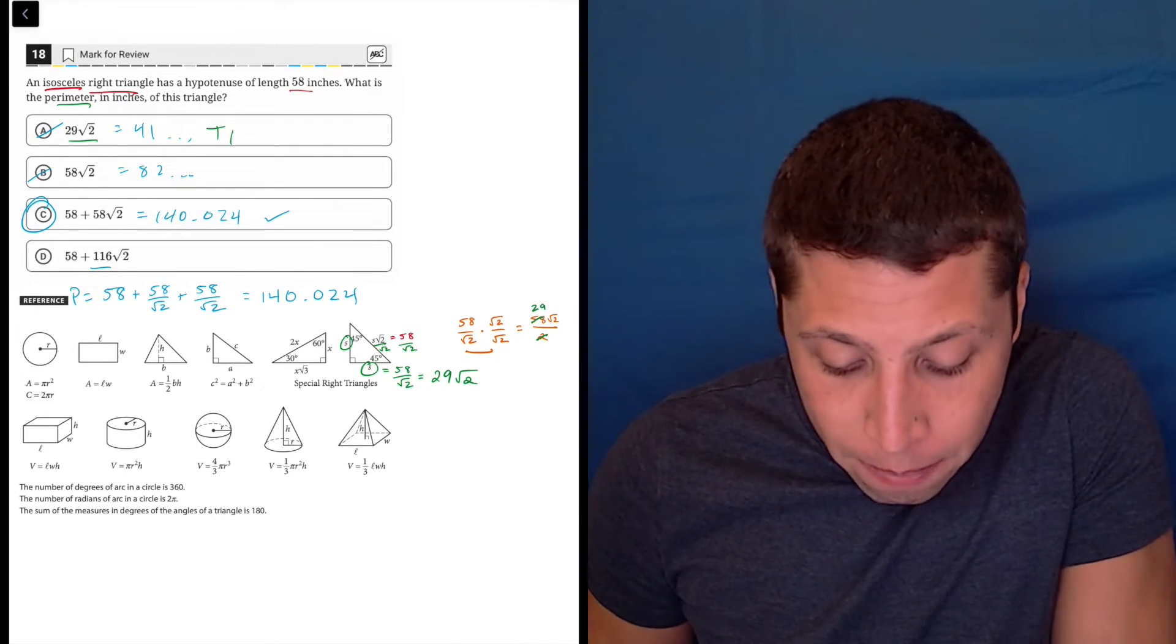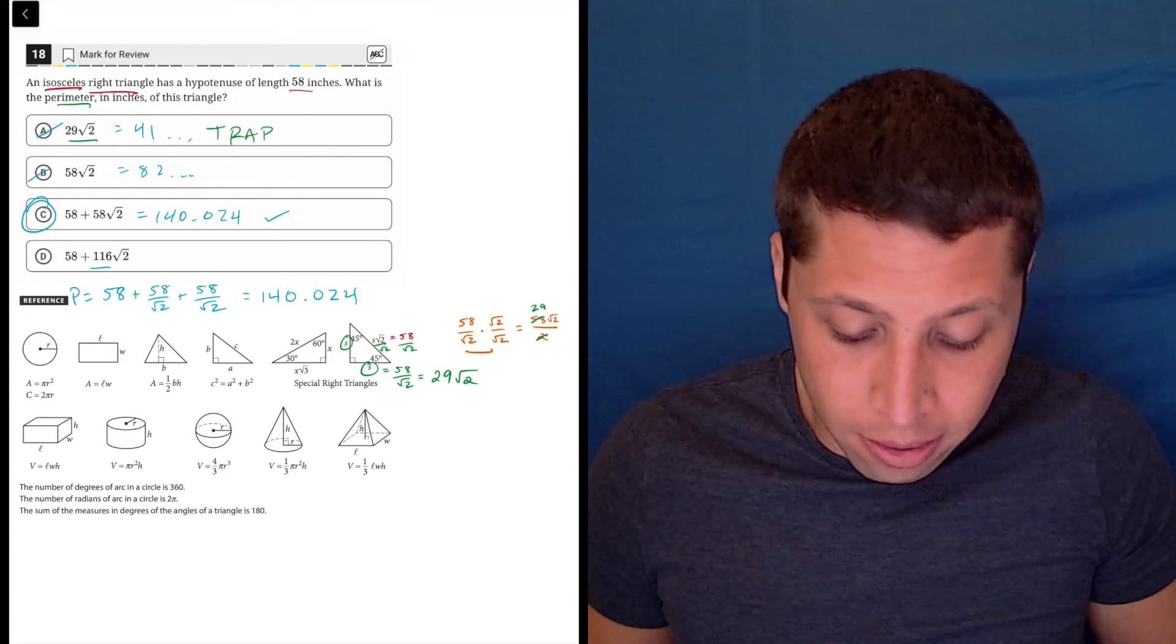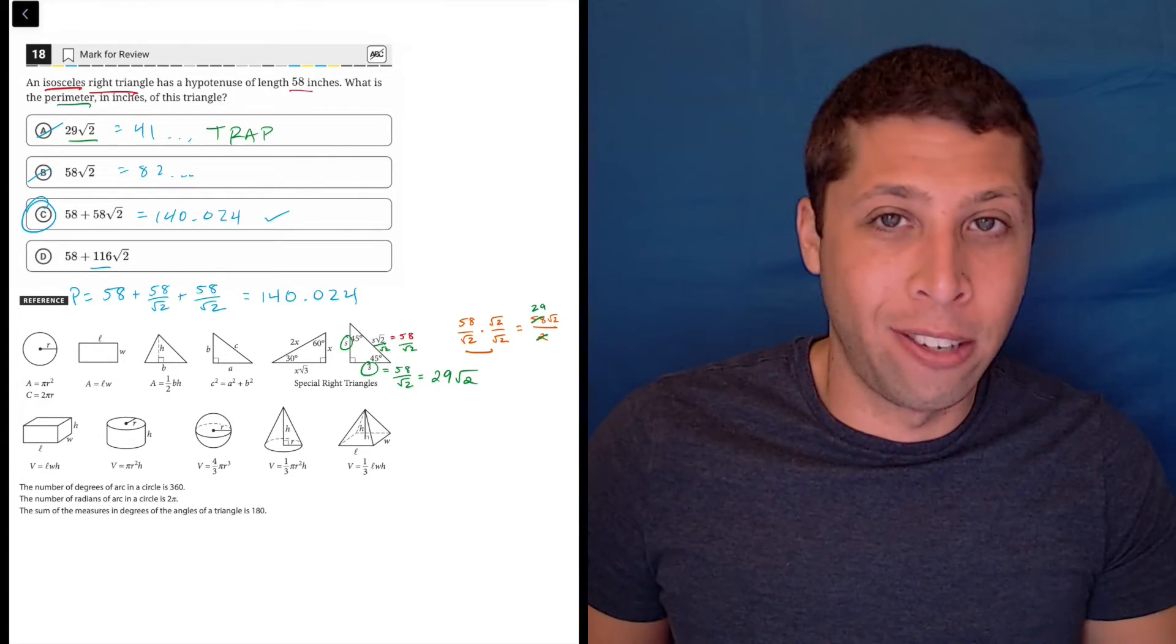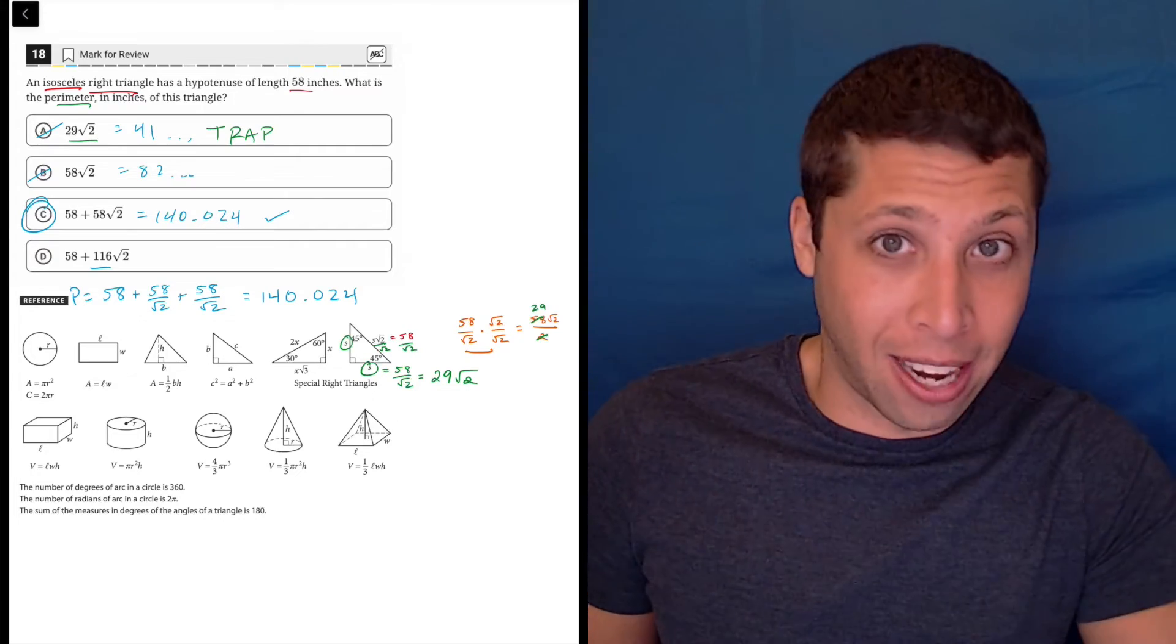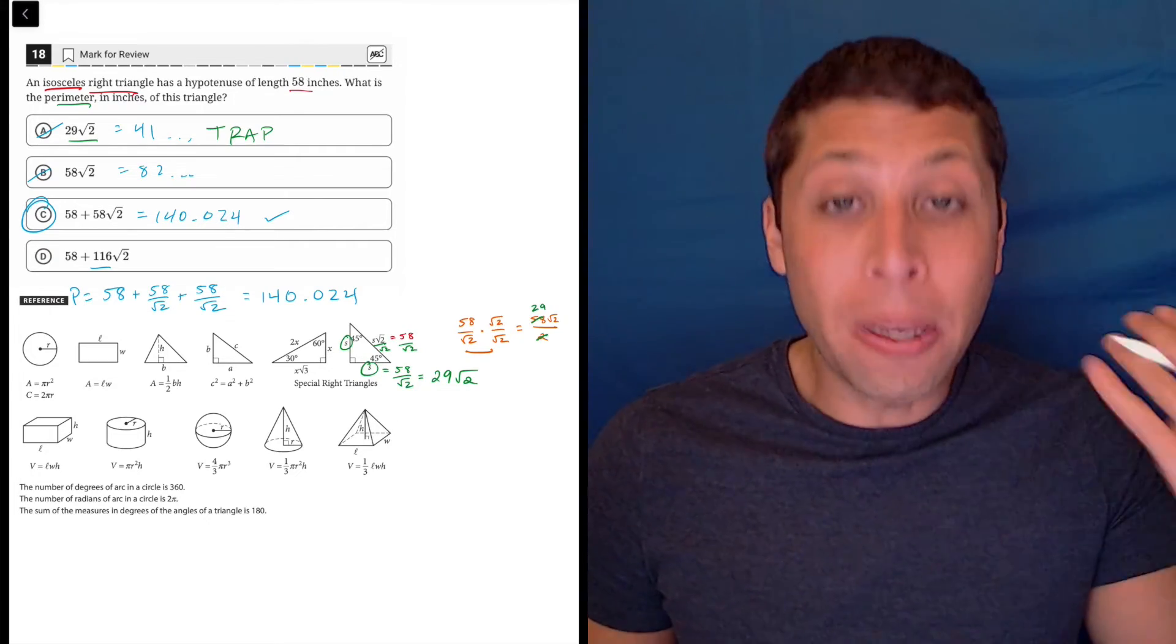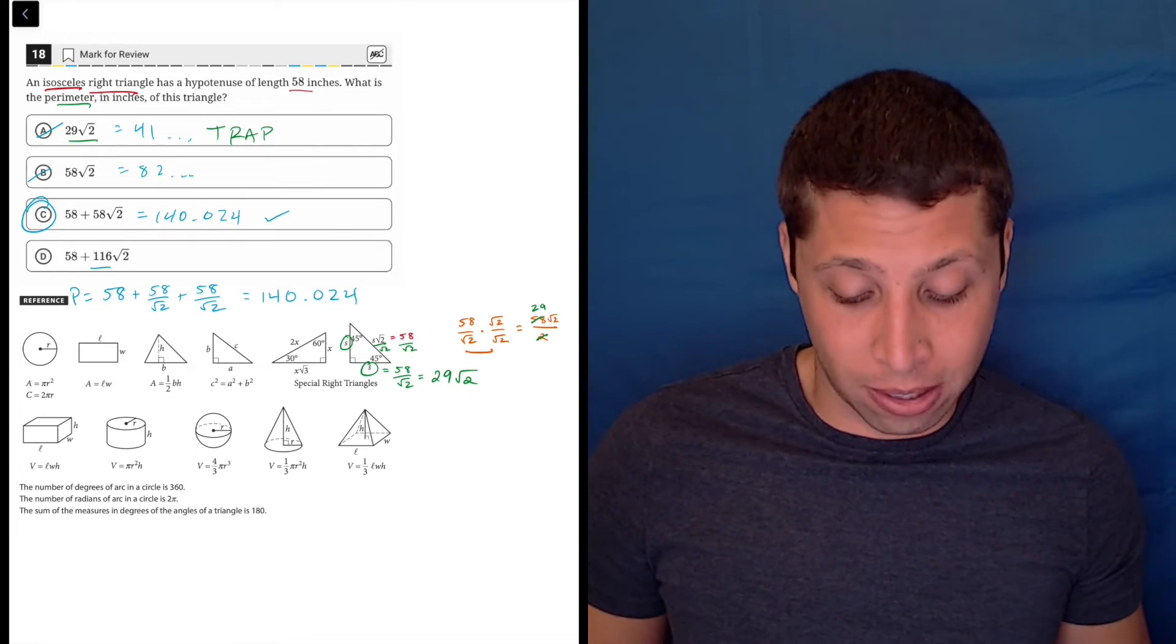So that's kind of a trap because they want you to find that, you need to find that to find the perimeter, but it doesn't actually matter for what they're asking, right? They want the perimeter. So that's just one piece of the puzzle, it is not the answer itself.